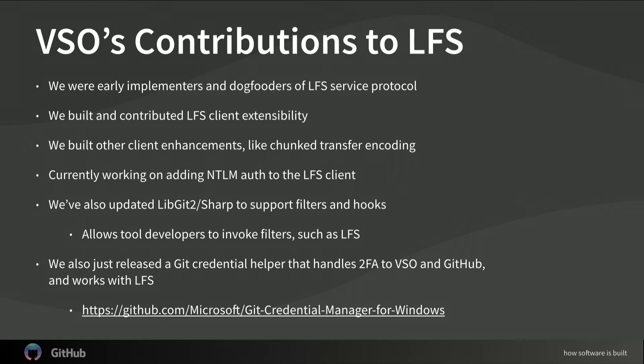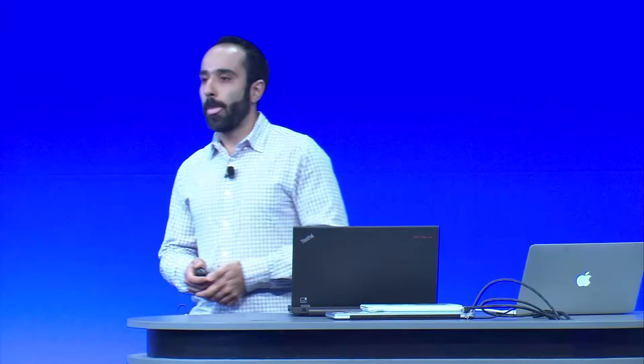All this client tooling is great, but when you're talking to different services, figuring out auth is always really tricky. We actually just yesterday released a new Git credential helper that we're calling the Credential Manager — currently for Windows, and we're working on Linux and Mac as well. It talks to both GitHub and Visual Studio Online, and will automatically handle two-factor auth. In VSO, it'll generate a personal access token, store it in your Windows credential store, and pass it along to the service — all transparent to the user. You just fetch or push and it just works.